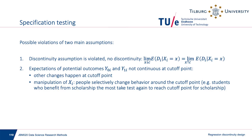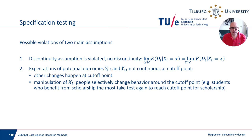Let's think about specification testing. For assumption one — the existence of a discontinuity in the treatment probability — you can directly test this, show a figure, and perform statistical tests. For assumption two — continuity of the conditional expectations of potential outcomes — this is largely untestable as an identifying assumption, but we can try to find supportive evidence. Two things can go wrong: other changes happening at the cutoff point, or people manipulating xi.